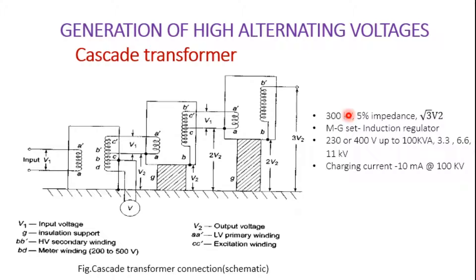Apart from this, we might face difficulties with transportation and erection of the transformer. These are the drawbacks, so we will go for a different connection by series or cascading of several identical transformers, where the high voltage winding of all the units effectively comes in series.